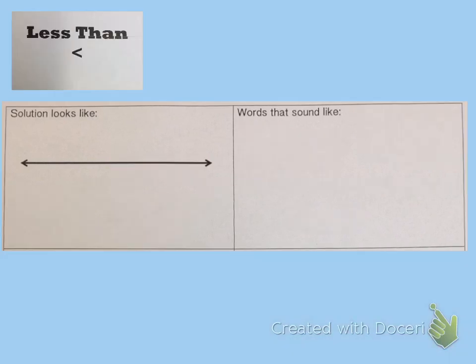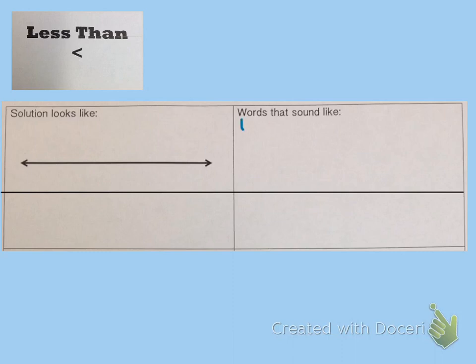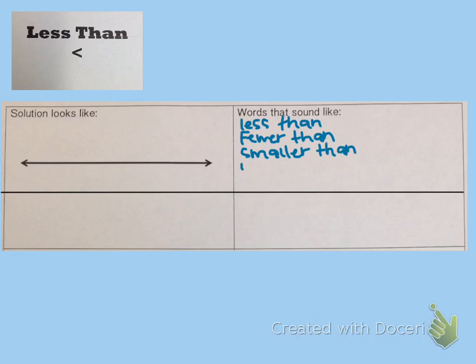Now let's try less than. Go ahead and draw a line for some examples and let's talk about words that indicate less than in a word problem. 'Less than' will indicate less than and so will 'fewer than.' We could have 'smaller than,' 'younger,' 'under,' and 'shorter.'